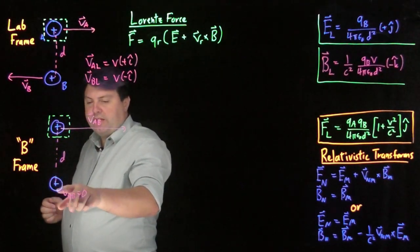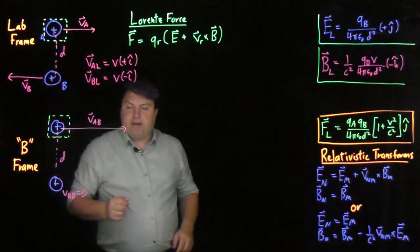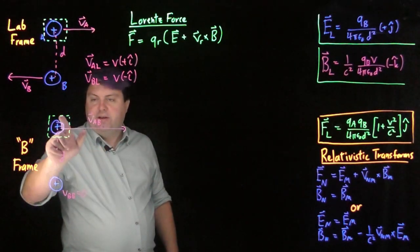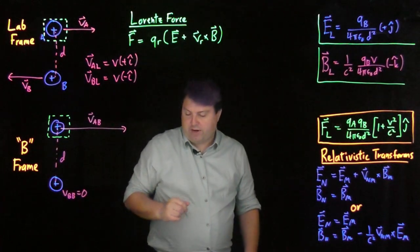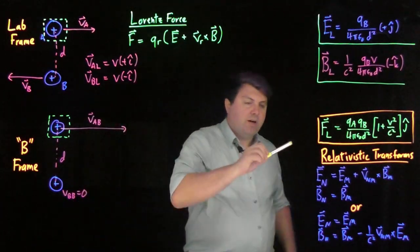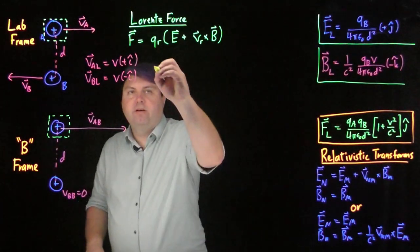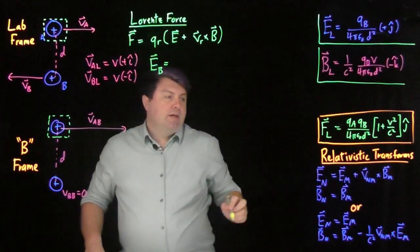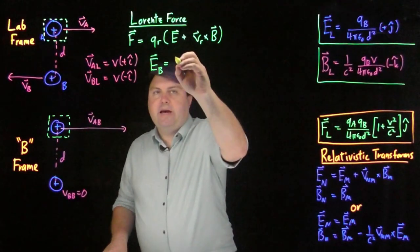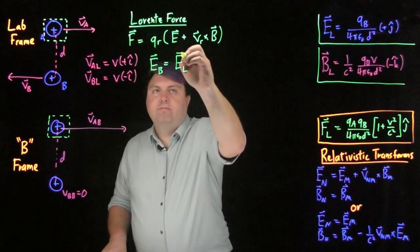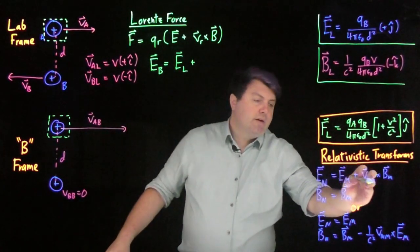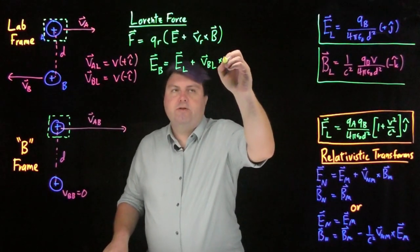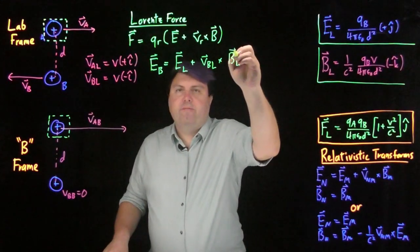In the B frame, our charge of interest is not moving, but A is moving in this frame. So we have to use our relativistic transforms here. The electric field in the B frame is going to be the electric field in the lab frame, plus the velocity of B relative to the lab frame crossed with the magnetic field of the lab frame.